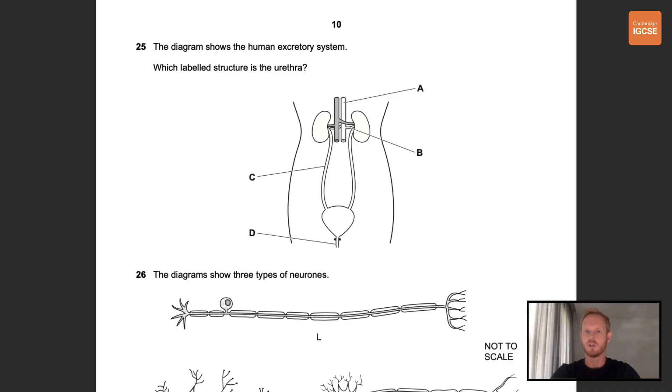Number 25. The diagram shows the human excretory system. Which labeled structure is the urethra? So A and B are blood vessels, C is a ureter, and D is the urethra. So the correct answer is D.